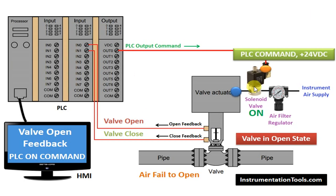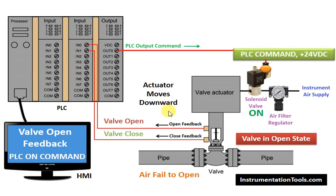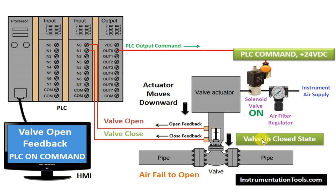As the SOV is energized, it will open the air circuit. So, it allows the input air from the SOV to the valve. Once the valve receives the air supply, the actuator in the valve — nothing but the diaphragm — will move, either downwards or upwards as per design. In our case, we consider air-fail-to-open, so it is already in open state. Whenever air is received on top of the diaphragm and activated, the air moves the diaphragm downwards so that the stem will move downwards to make the valve close. As the air comes to the valve, the actuator moves downwards. As the actuator moves downwards, the stem moves downwards, so the plug in the valve will close. So, the valve state will change from open state to closed state.